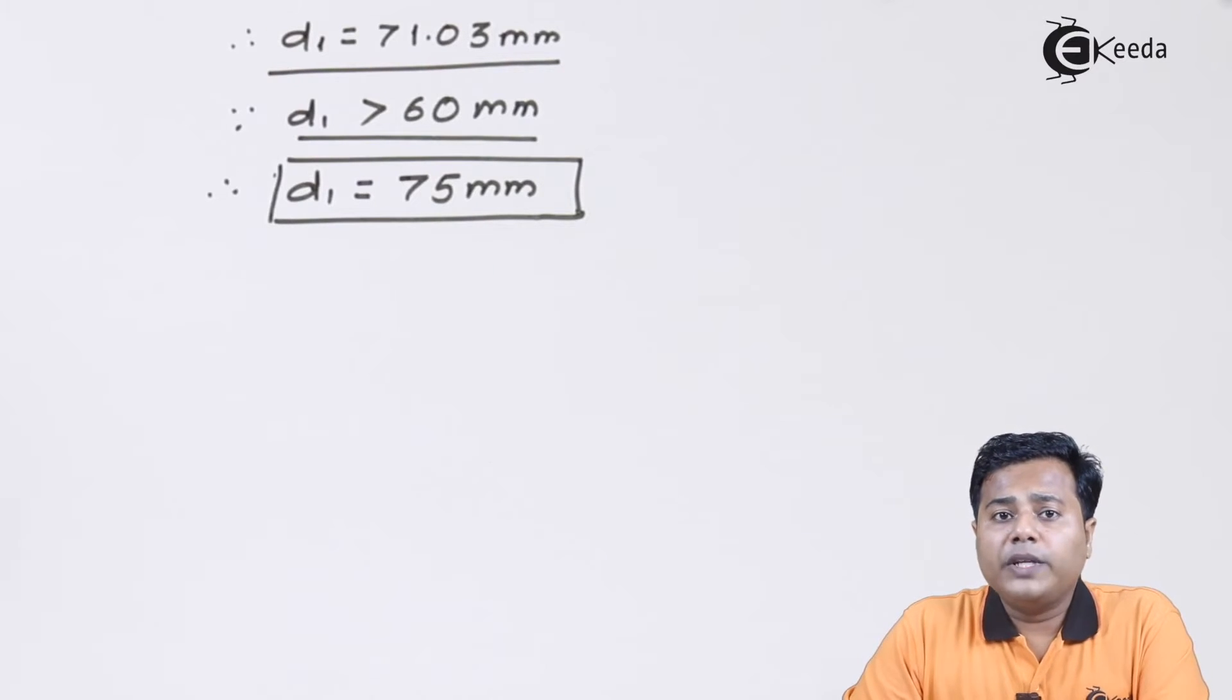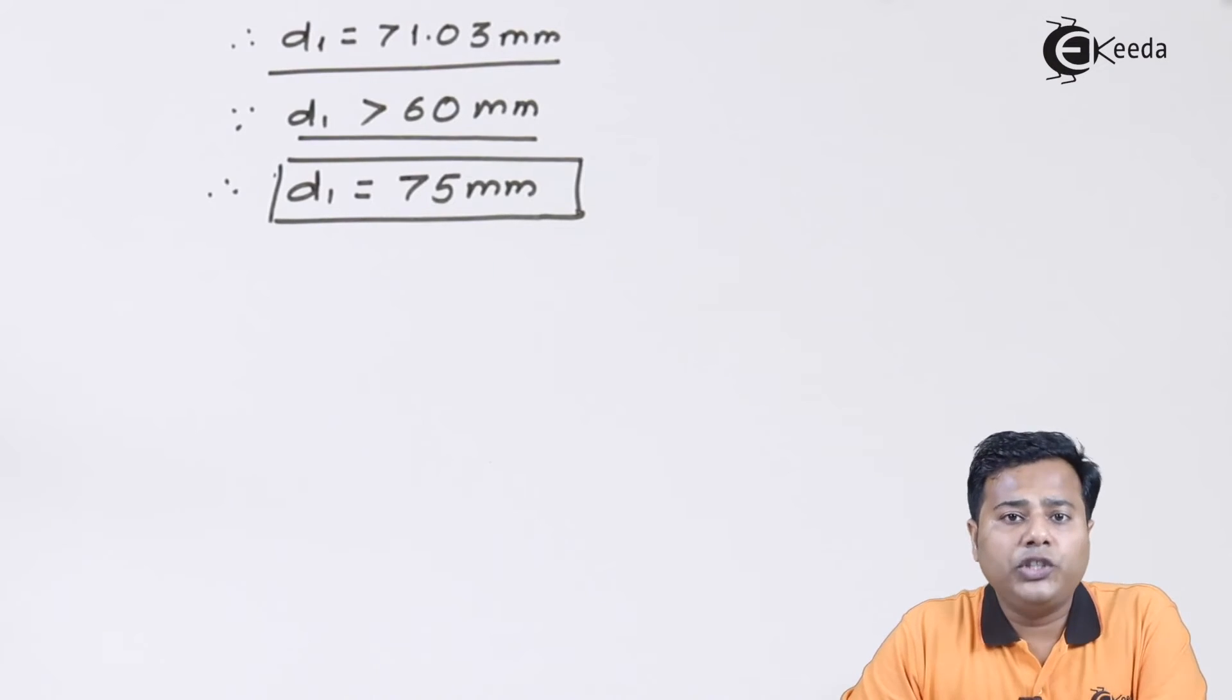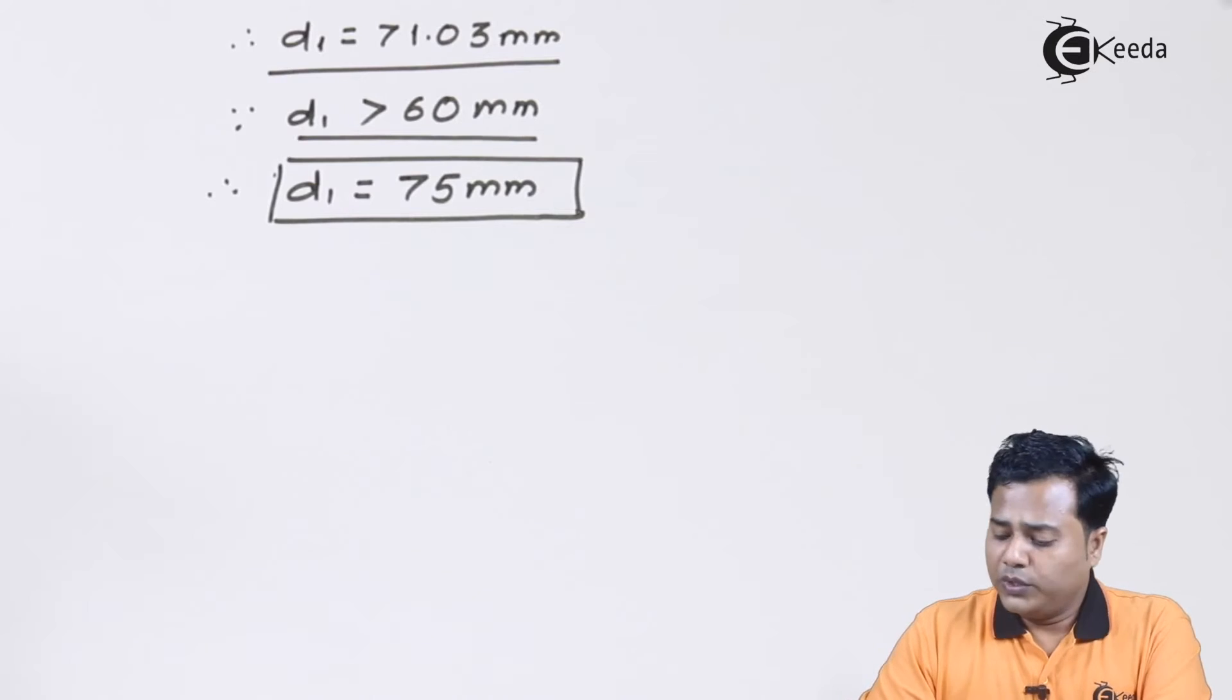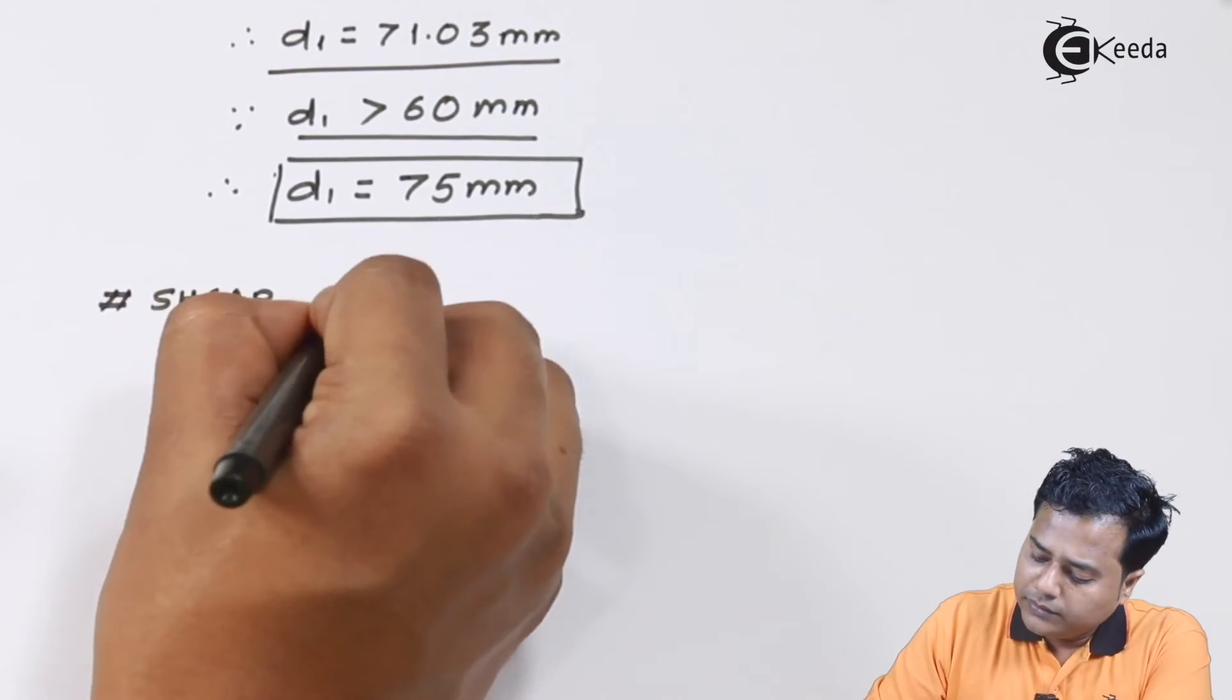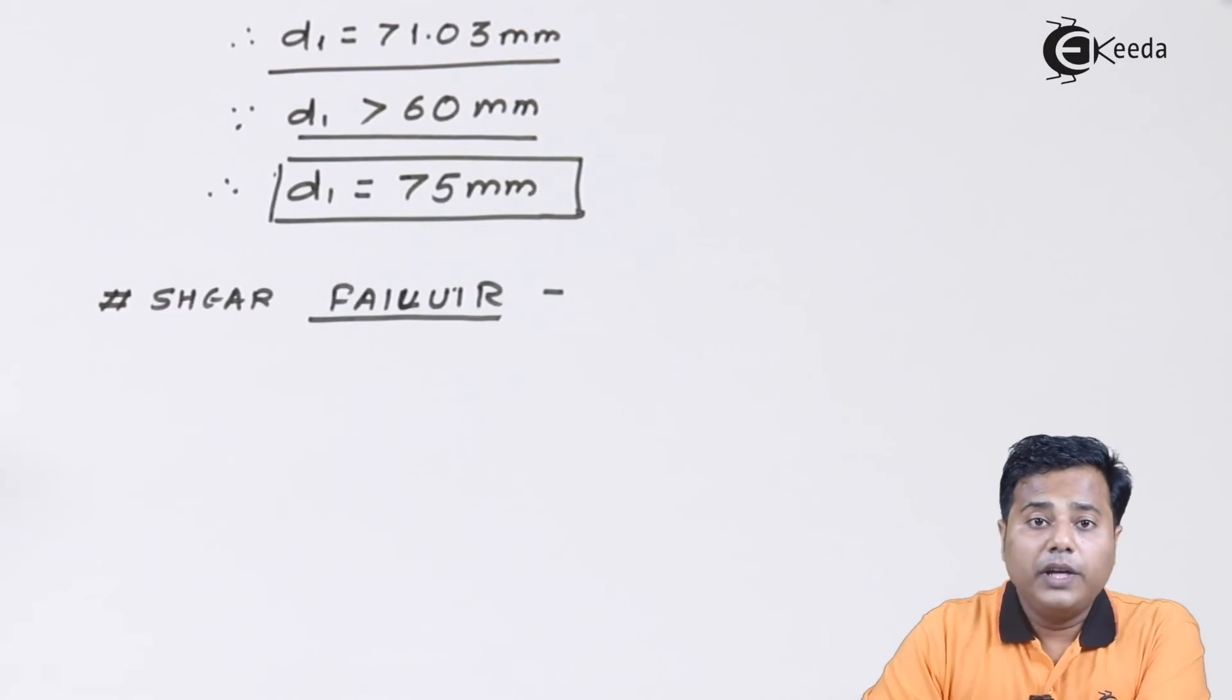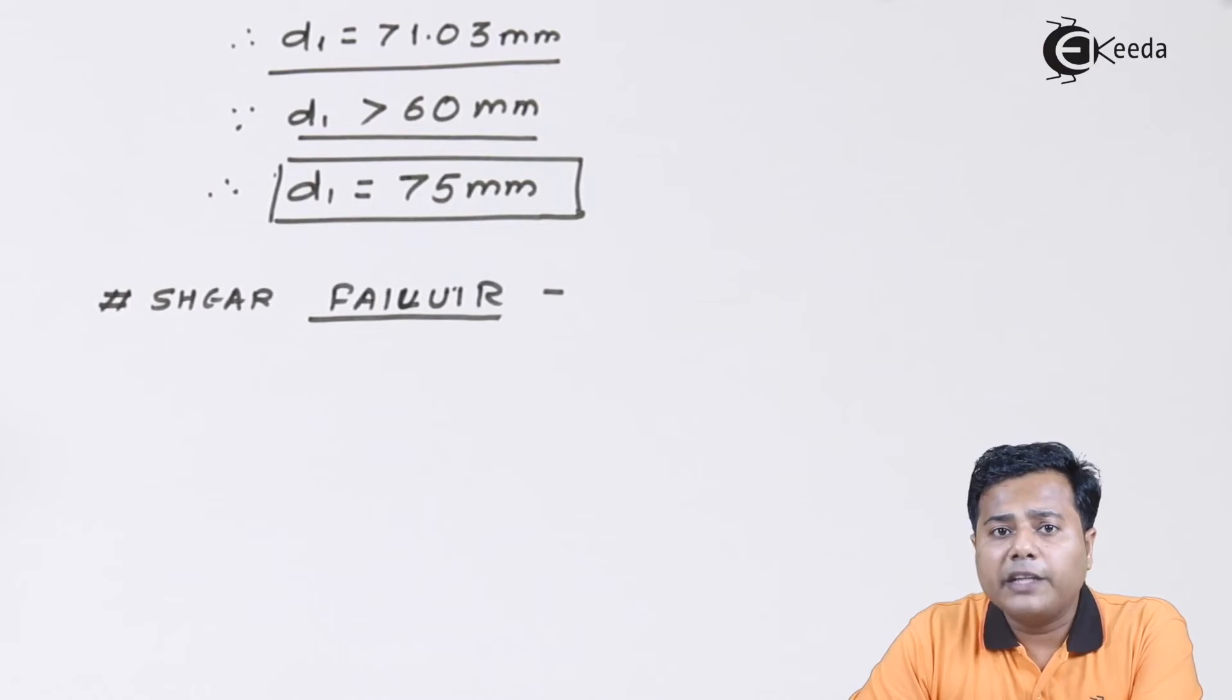Now like I said, there are two ways this particular eye end will fail. First we have said is tensile loading, and second is shear failure. We have to consider the shear factor also. Hence, shear failure.